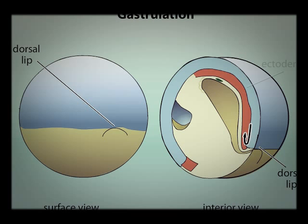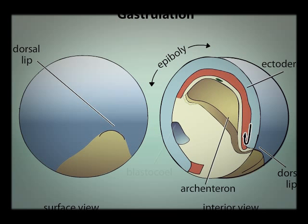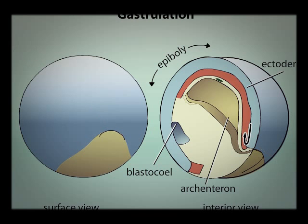At the same time, the ectoderm extends around the embryo surface in a process called epiboly. As gastrulation proceeds, a cavity called the archenteron forms while the blastocoel progressively shrinks. The archenteron is the primitive gut and is completely surrounded by endodermal tissue. The endoderm at the roof of the cavity originated from the outside of the embryo. The cavity is continuous with the outside via the blastopore, which eventually becomes the anus of the animal.